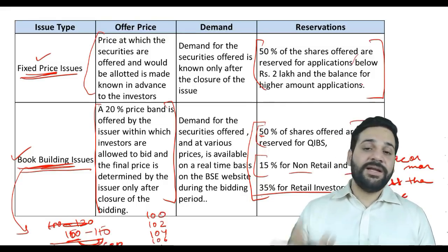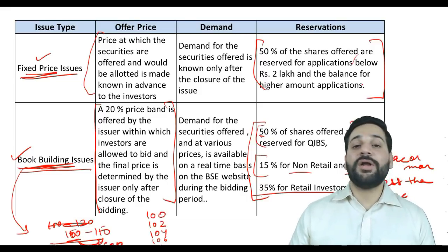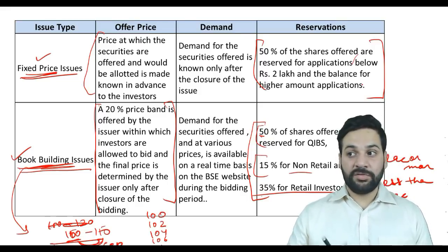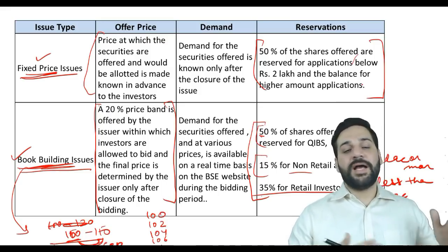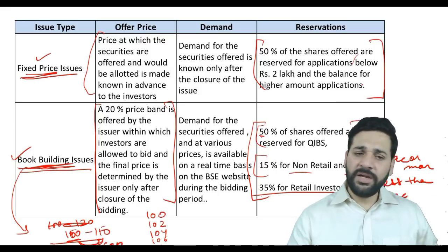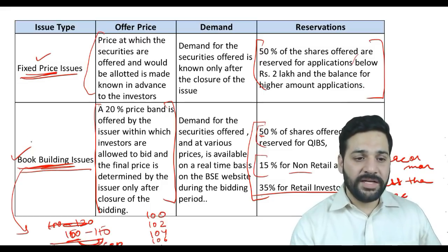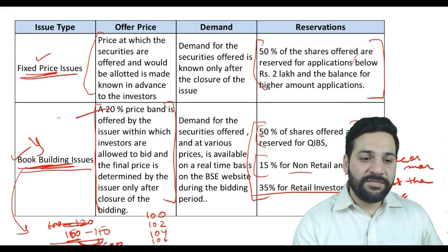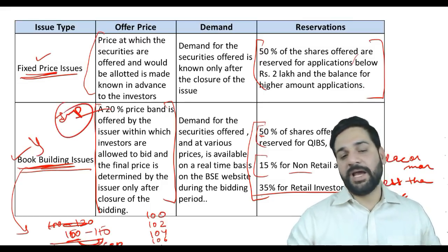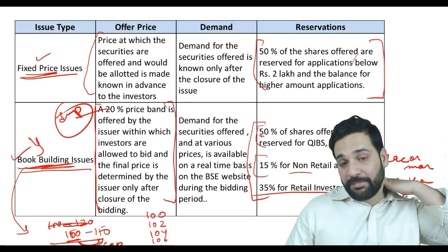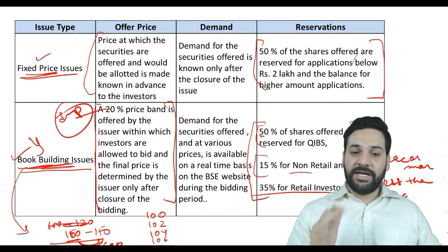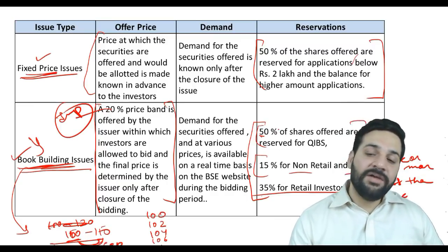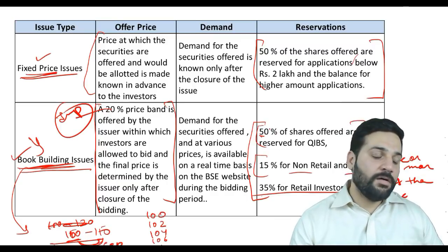If retail investors are not interested and didn't show much interest, those shares can be issued to QIBs and HNIs. The 20% price gap rule — the maximum difference between floor price and cap — is really important for book building.